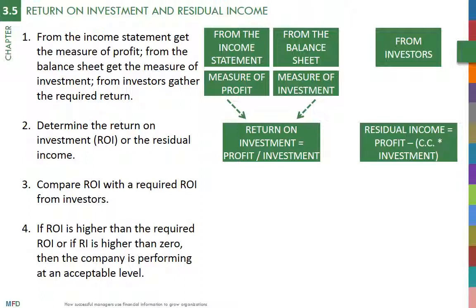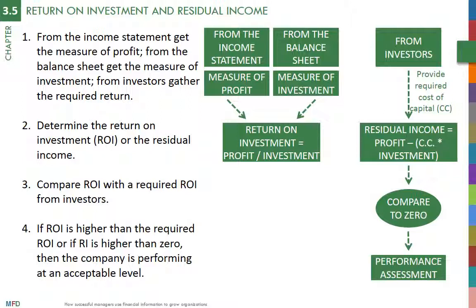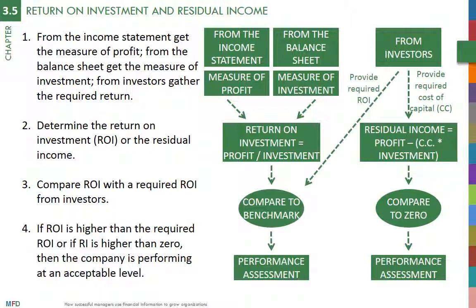Like for ROI, the RI measure can be calculated using assets or equity. Compared with ROI, the residual income measure has the advantage of being an absolute number, while ROI is a percentage. For example, a 25% ROI is a lot of money for an investment of 100,000 euros, but not much for an investment of 10 euros. Even if both have the same 25% ROI, a residual income, RI, of 100,000 euros is always a lot of money. Residual income larger than zero is good.